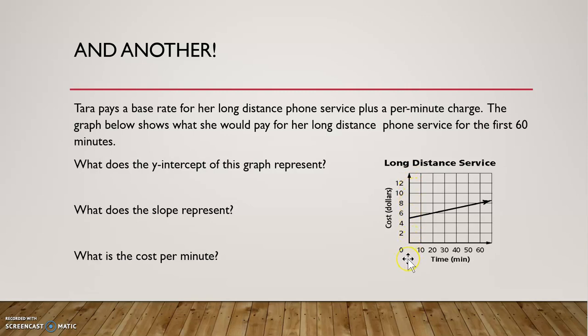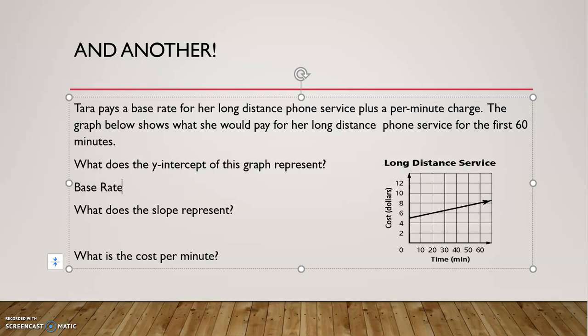So what do we think then that this y-intercept is going to reflect? Notice no time has passed. So that would be the flat fee, right? The y-intercept would be the base rate or the flat fee. So that's what we're going to write here. Base rate or flat fee. We'll just highlight that in red just to set it apart since that is our answer. And you know what? What is that base rate or flat fee? If you're looking over here, it looks like it's right between 4 and 6, which would make it a $5 flat fee.